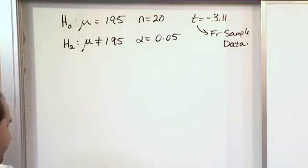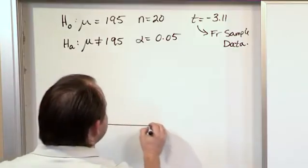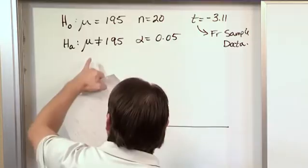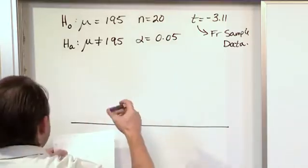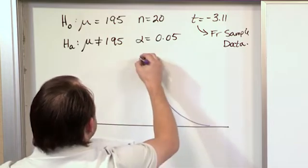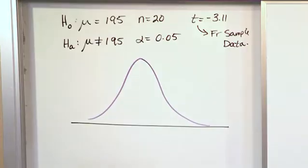So we need to draw a picture, or maybe even more than one picture. This is going to be a T distribution because we have a sample size less than 30, and we're talking about the mean of something. And we know it's going to look bell-shaped, even though the exact shape of it depends on the degrees of freedom, which depends on how many samples we have.